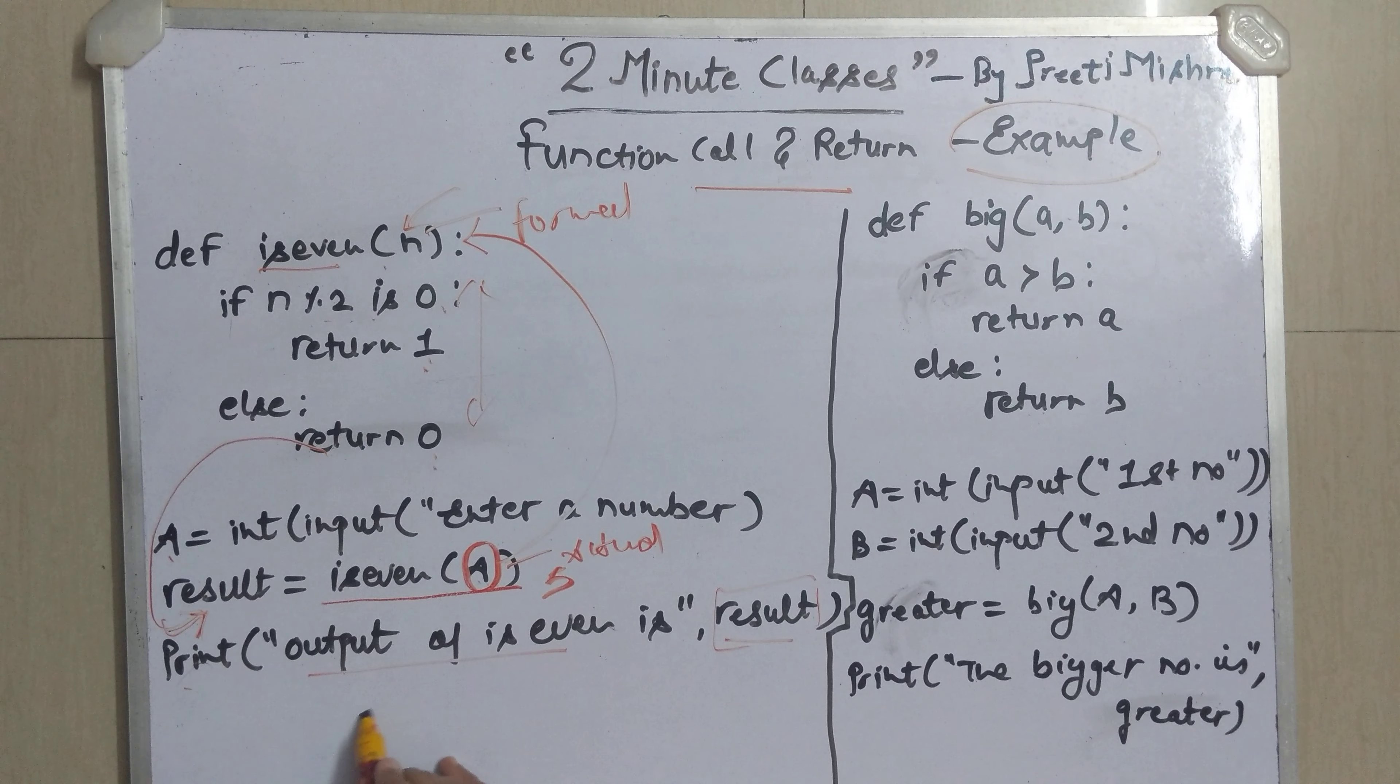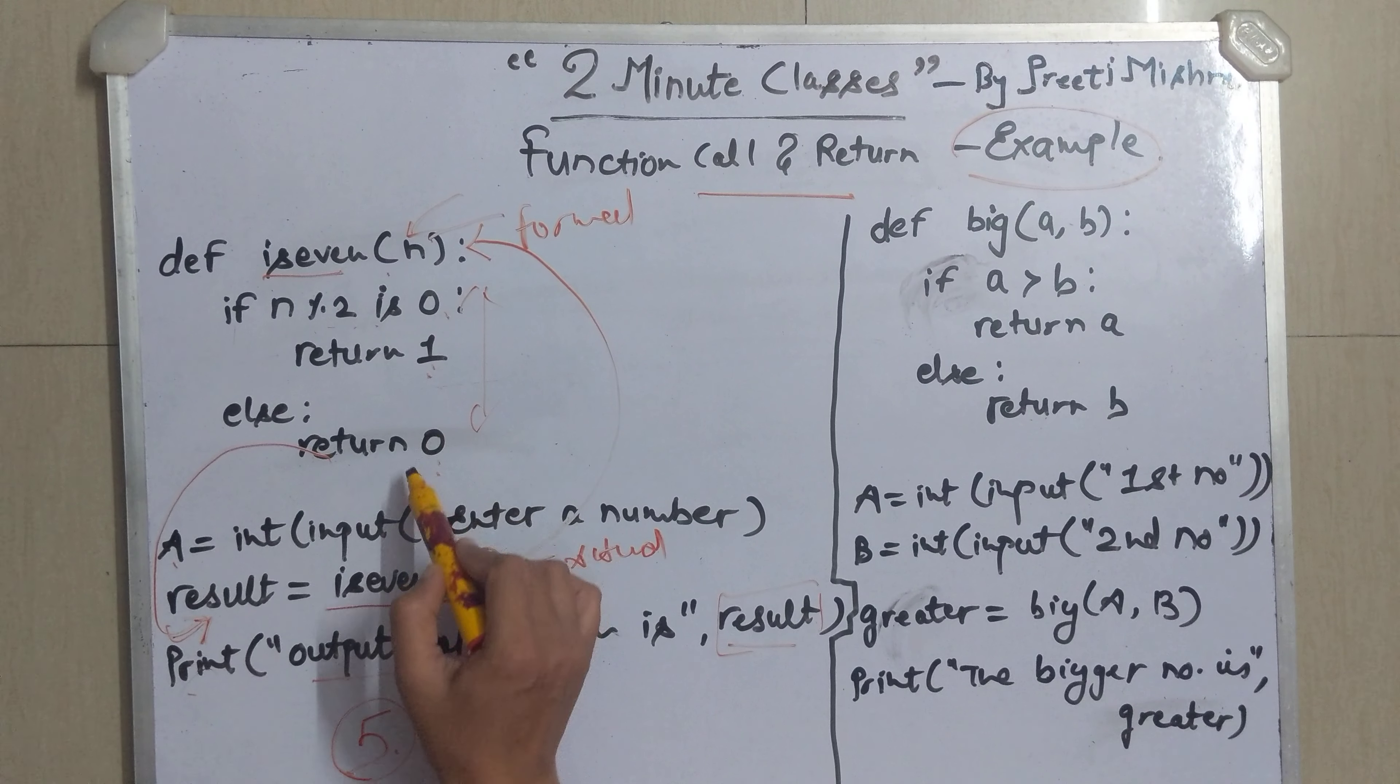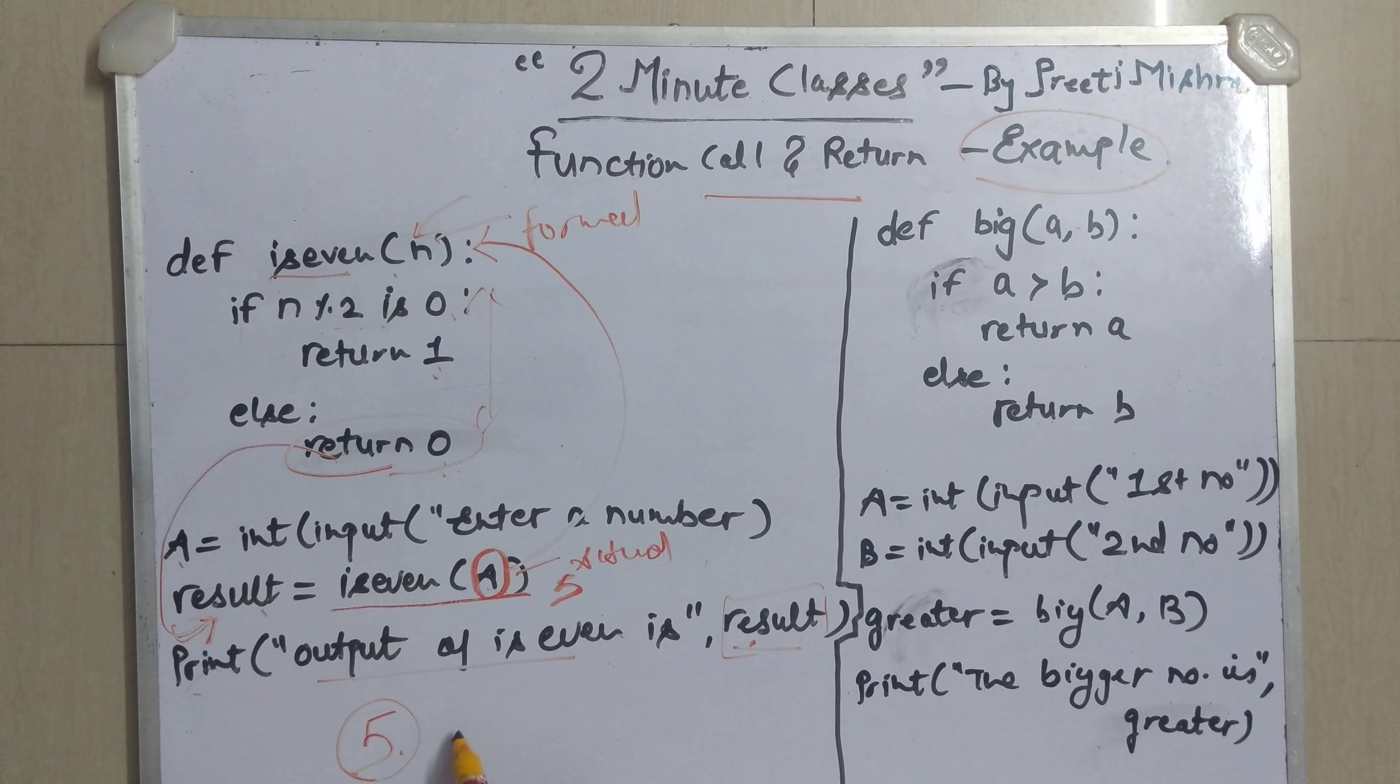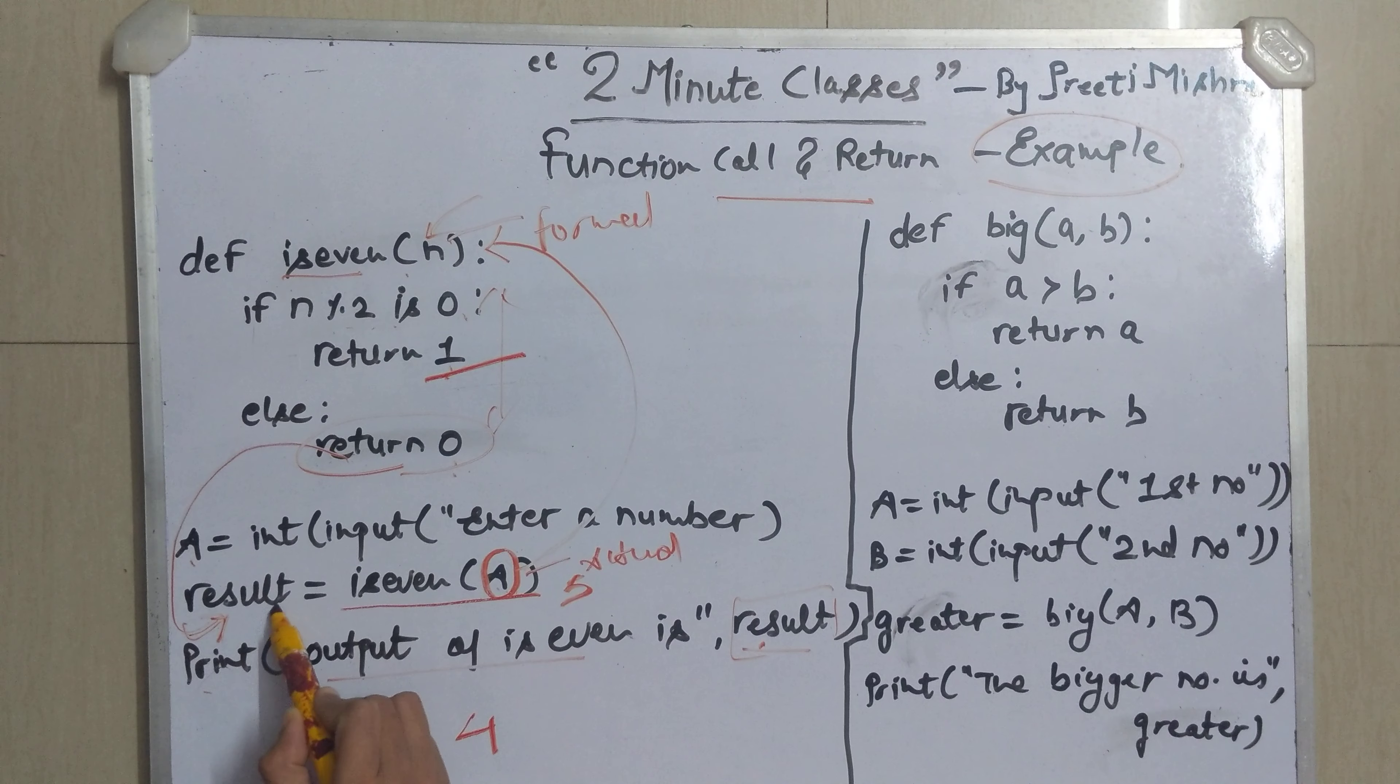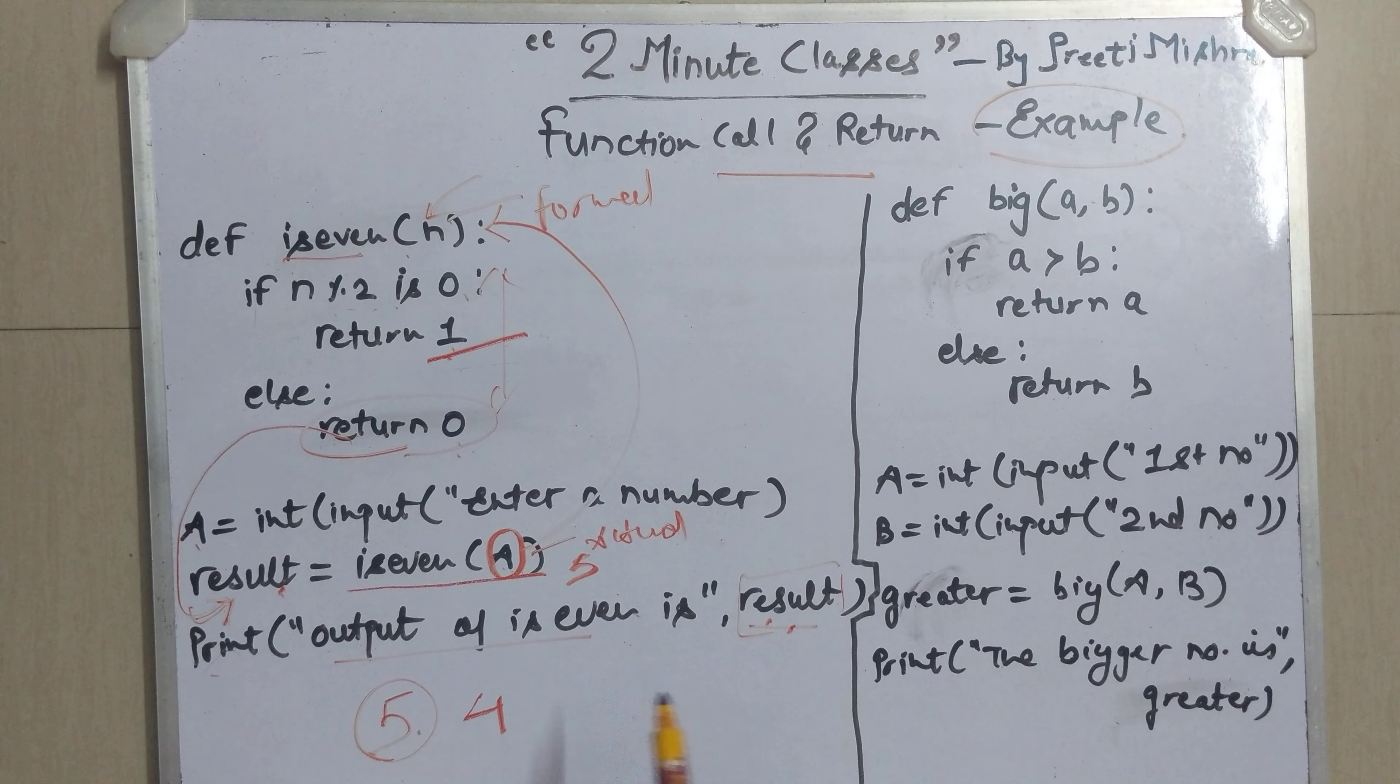So suppose in this function I enter 5 so it will check this function and then it will return 0. So the value of result will come out to be 0 and it will print 0. And if I enter 4 it will check it with 4 and it will return the value 1. The value of result will become 1 and it will be printed as 1. So this is function call and execution.